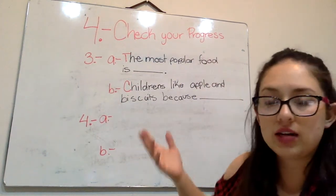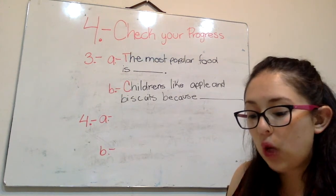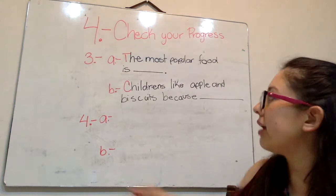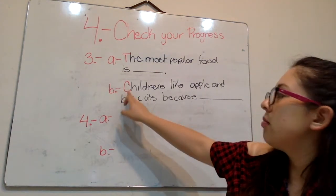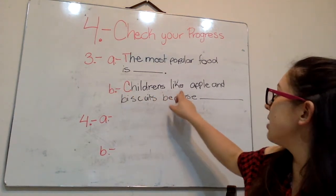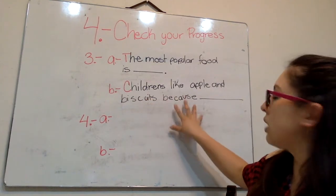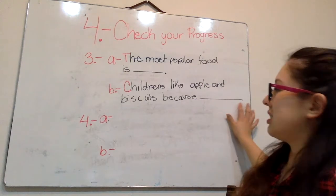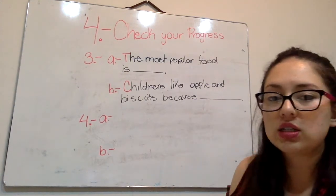Letter b, why do children like apples and biscuits. Letter b mayúscula, children like apples and biscuits because, porque les gustan las apples y los biscuits a los chicos, y escribimos lo que querramos escribir.